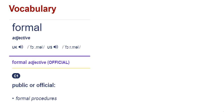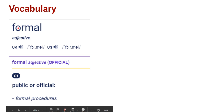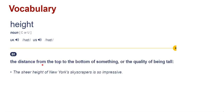Formal is the opposite of informal, so formal means public or official. And 'height' — if you delete the 'e' you get 'high,' which you know means tall. Height is a noun referring to the distance from the bottom to the top of something. Example: my house is 10 meters high, meaning from the bottom to the top is 10 meters.